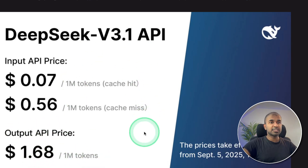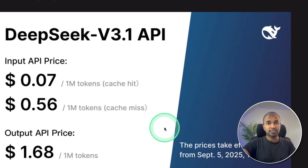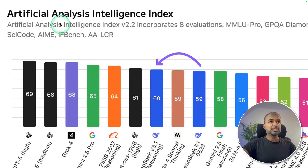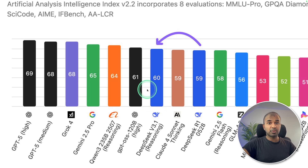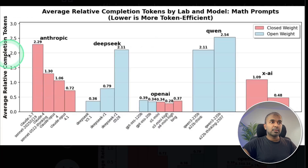Comparatively, this is cheaper than other providers. As per Artificial Analysis's intelligence index, this is one step higher than Claude Sonnet thinking. Also remember, this is open source — open weights — and the token efficiency is far better.